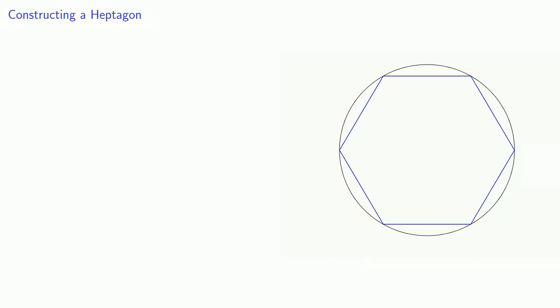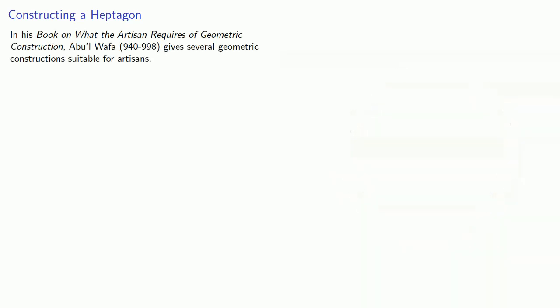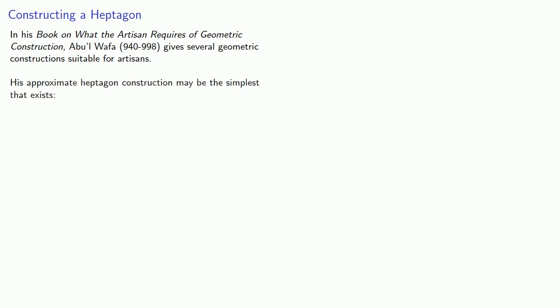But probably the simplest appears in the book of What the Artisan Requires of Geometric Construction by Abu Wafa, who lived in the 10th century. Abu Wafa gave several geometric constructions suitable for artisans. His approximate heptagon construction may be the simplest that exists.